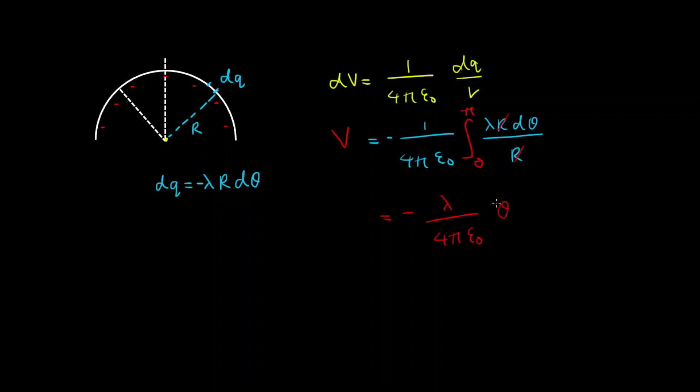Well what we get is theta evaluated from 0 to pi and that gives minus lambda pi on 4 pi epsilon 0.